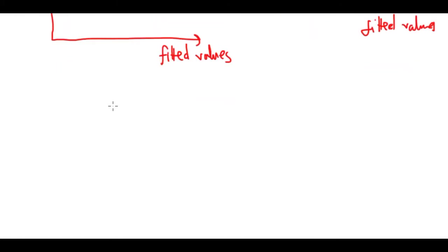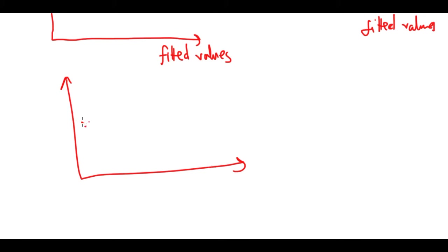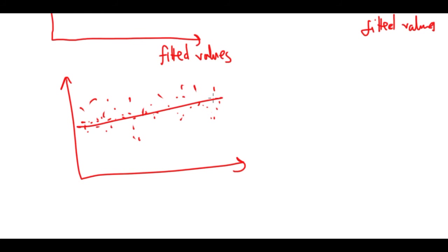When you include horsepower squared and plot the residuals again, you are going to see something like a flat, horizontal scatter with no discernible pattern. If there is no discernible pattern, it means you have taken care of the non-linearity in your data.